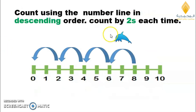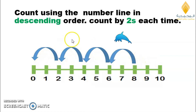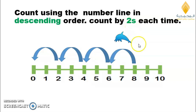Look at this dolphin. He wants to count using the number line in descending order. Again, descending order — starting from the right to left. Excellent, students! Count by twos each time. Twos means two jumps or two numbers. Let's get started.